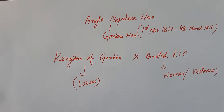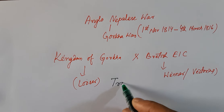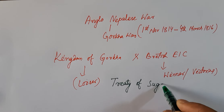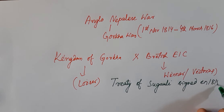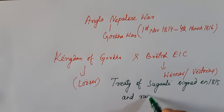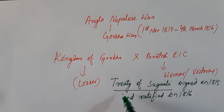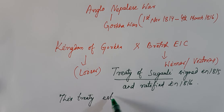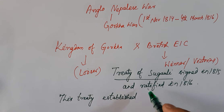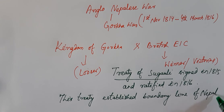One thing is very important. After this war, a treaty was signed called the Treaty of Sugauli. The Treaty of Sugauli was signed in 1815 and ratified in 1816. This Treaty of Sugauli established the boundary line of Nepal. This is a point you should remember from an exam point of view.